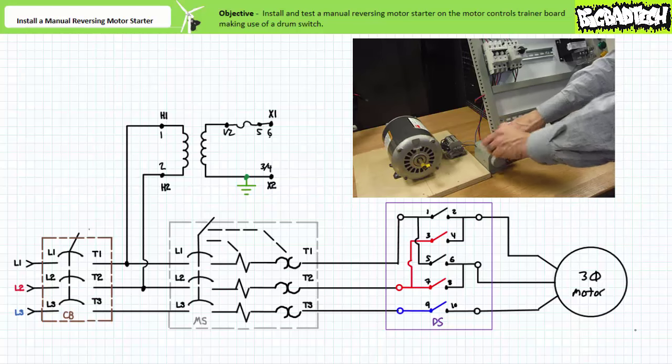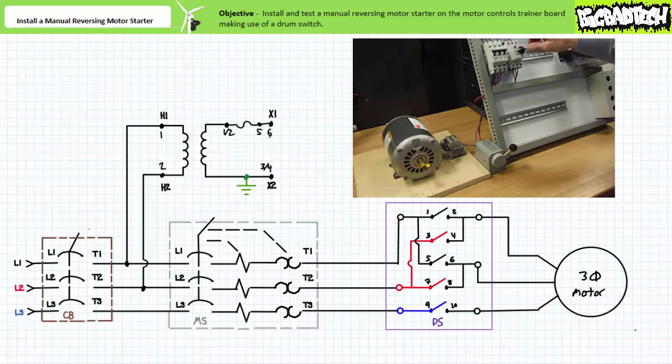To reverse direction, first the drum switch is rotated to the reverse position. Then the manual motor starter is closed. In this case, applied phase sequence as seen by the motor is such that it rotates in the opposite direction.